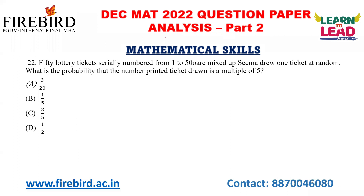Let us move on to the next question. 50 lottery tickets serially numbered from 1 to 50 are mixed up. Seema drew 1 ticket at random. What is the probability that the number printed on the ticket drawn is a multiple of 5? From 1 to 50, there are 10 multiples of 5. In total there are 50 tickets. So the probability is 10 by 50, which is 1 by 5.